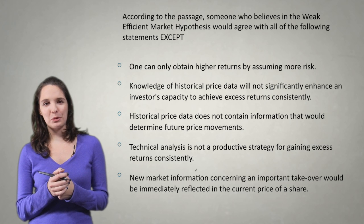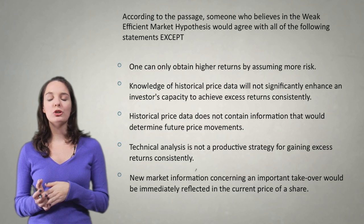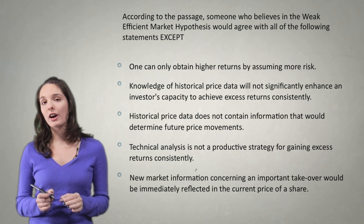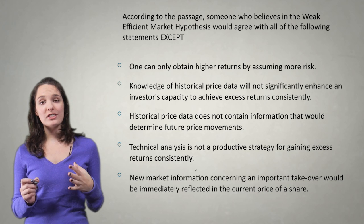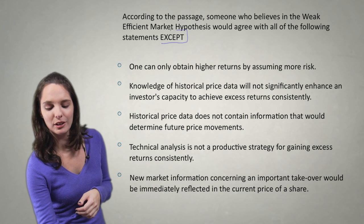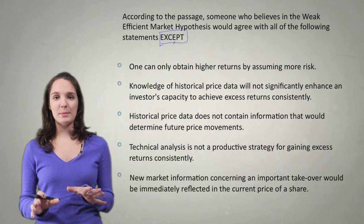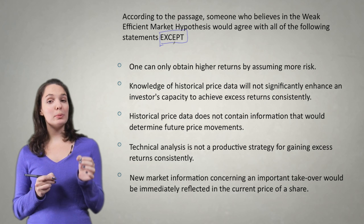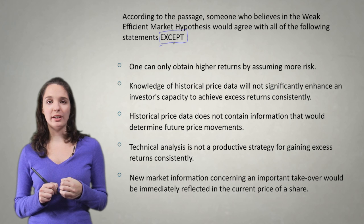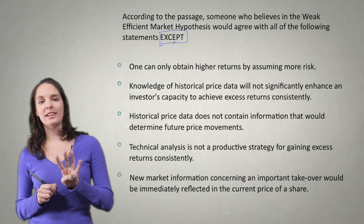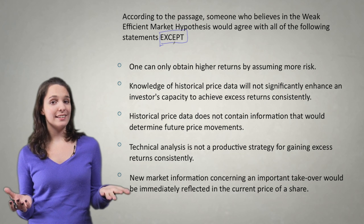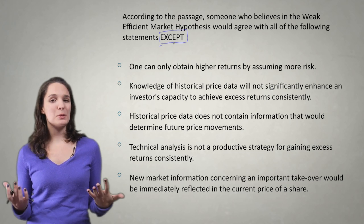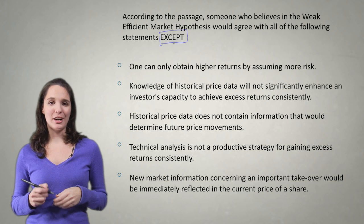Now let's look at this question. It says: 'According to the passage, someone who believes in the weak efficient market hypothesis would agree with all of the following statements except.' The first thing I see is this big capitalized word EXCEPT, and that is so, so important. What we're really looking for is that someone who believes in the weak EMH theory will agree with four of these answer choices and will not agree with one. It's that one exception answer choice that we're looking for, and that's going to be our correct answer.